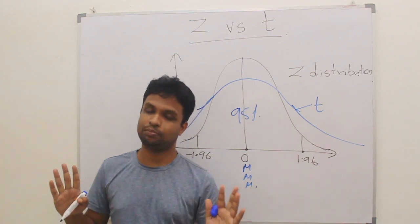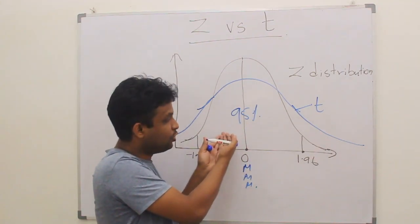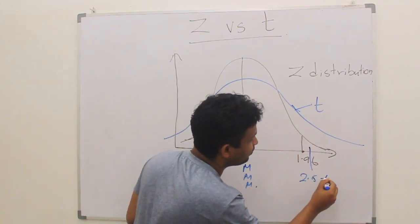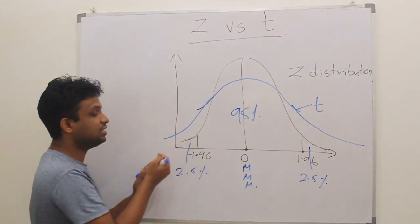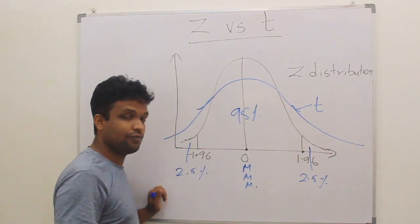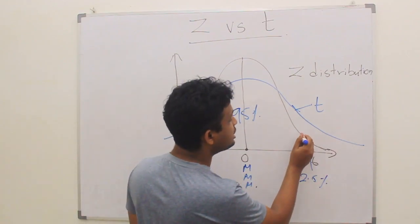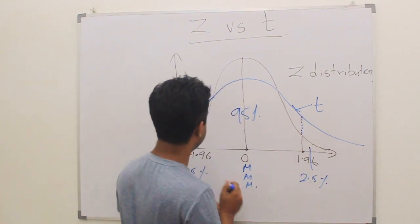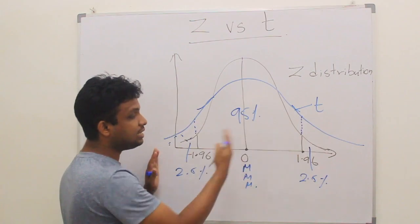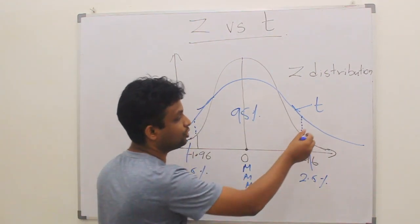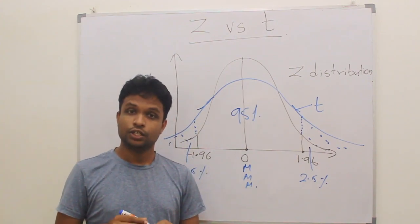So how do you plot 95%? When you are plotting 95% at the center, we know that 2.5% is here and 2.5% is here in the Z-distribution. In T-distribution, we can understand that if you get this specific line, the individuals in this part, the tails of the T-distribution, will be higher than 5%.